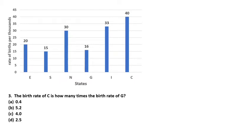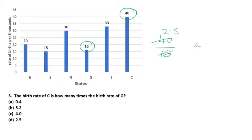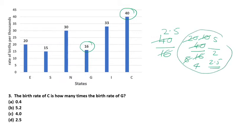The birth rate of C is how many times the birth rate of G? Birth rate of C is 40, birth rate of G is 16. We divide 40 by 16. You can simplify: 16 times 2 is 32, remaining 8 is 0.5 times, so the answer is 2.5. Alternatively, cancel step by step: 40 over 16, divide by 2 gives 20 over 8, divide by 2 gives 10 over 4, divide by 2 gives 5 over 2 which is 2.5. So 2.5 is the correct answer.